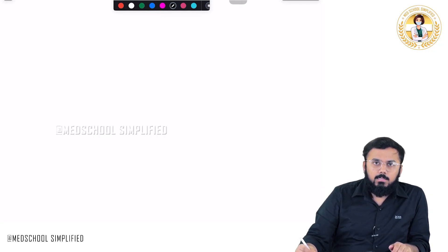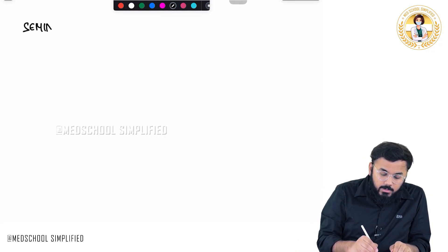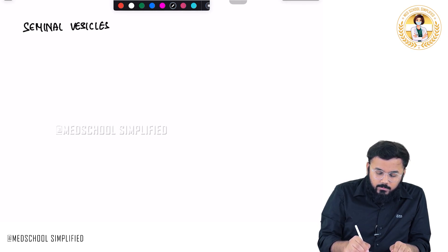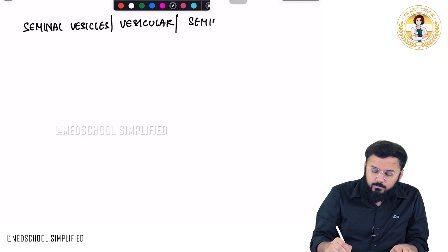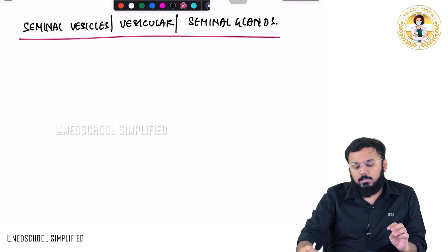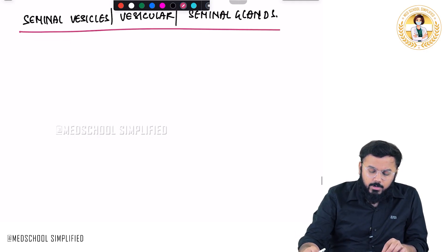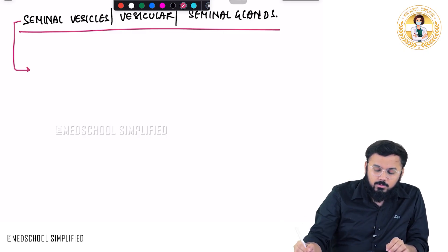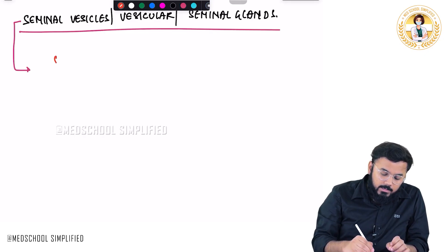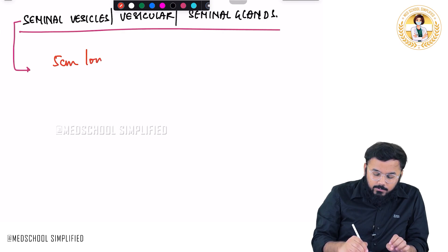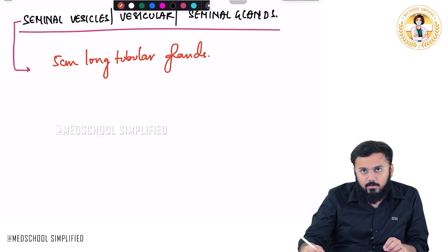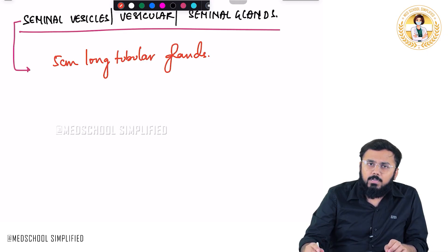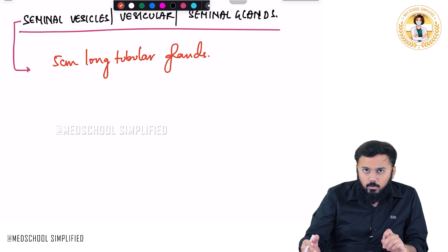Hello guys. We shall now be discussing the seminal vesicles, also called vesicular glands or seminal glands. These are 5 cm long tubular glands. You all should know that 70% of semen consists of seminal vesicular fluid.